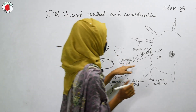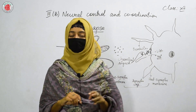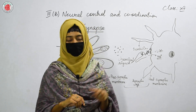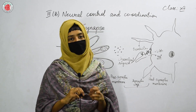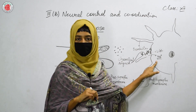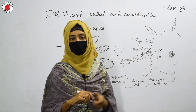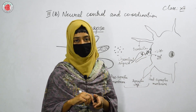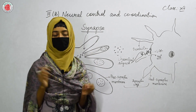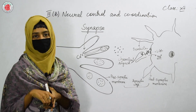Ligand-gated channels can open only when there is a chemical received by the receptors present towards them. By the opening of ligand-gated channels, the sodium can easily enter into the nerve cell, and once the sodium enters, that process is called depolarization of the cell. In the first neuron, we have seen the mechanically gated channels open causing the depolarization of the cell.